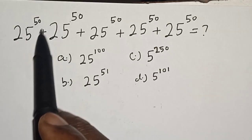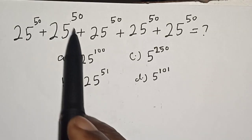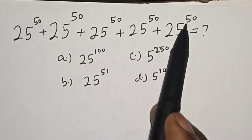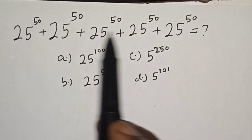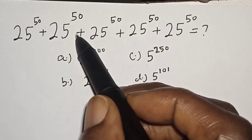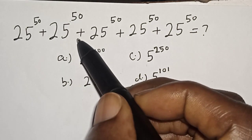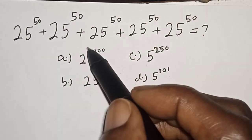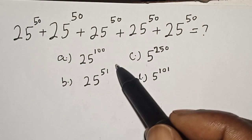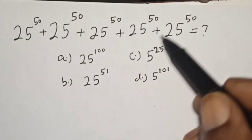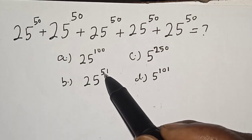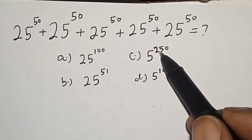25 raised to power 50 plus 25 raised to power 50 plus 25 raised to power 50 plus 25 raised to power 50 plus 25 raised to power 50 is equal to what? Hi everyone, welcome to my class. In this class we want to solve this nice math problem — sum of powers. Before we proceed, please don't forget to like, share, comment and subscribe. The options are: A = 25 raised to power 100, B = 25 raised to power 51.